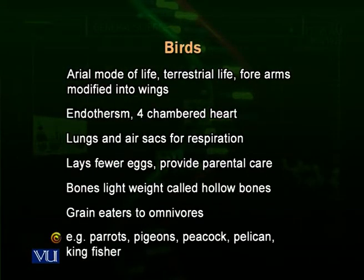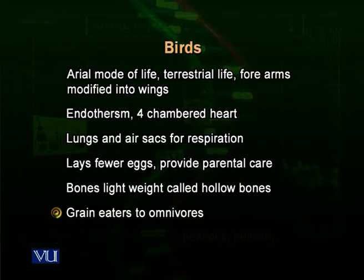We know birds such as parrots, pigeons, peacocks, falcons, and kingfishers. Birds could be herbivores or carnivores — they are consumers present at different levels of food chains. There are grain-eating birds like sparrows, and some birds which eat meat, like kingfishers which feed on fishes. So birds make a very important part of food chains and food webs.